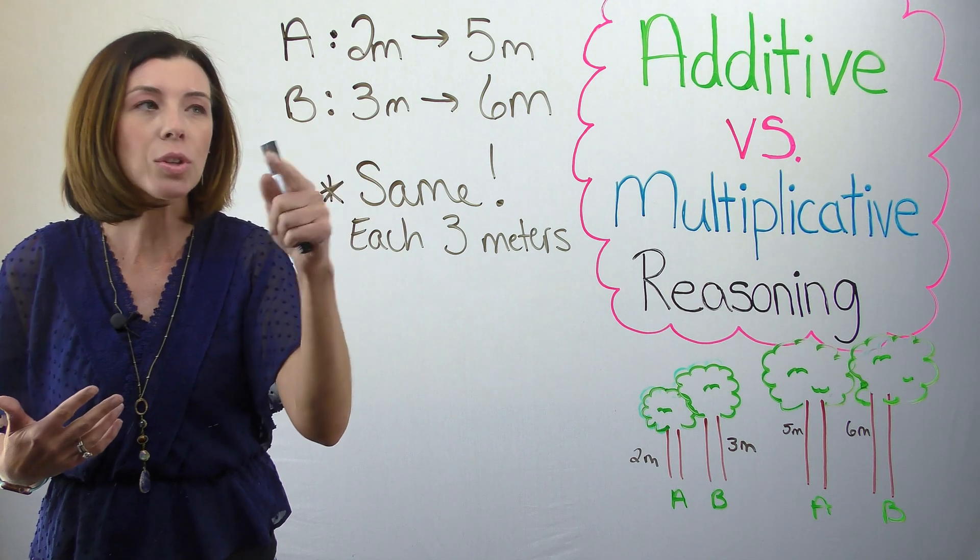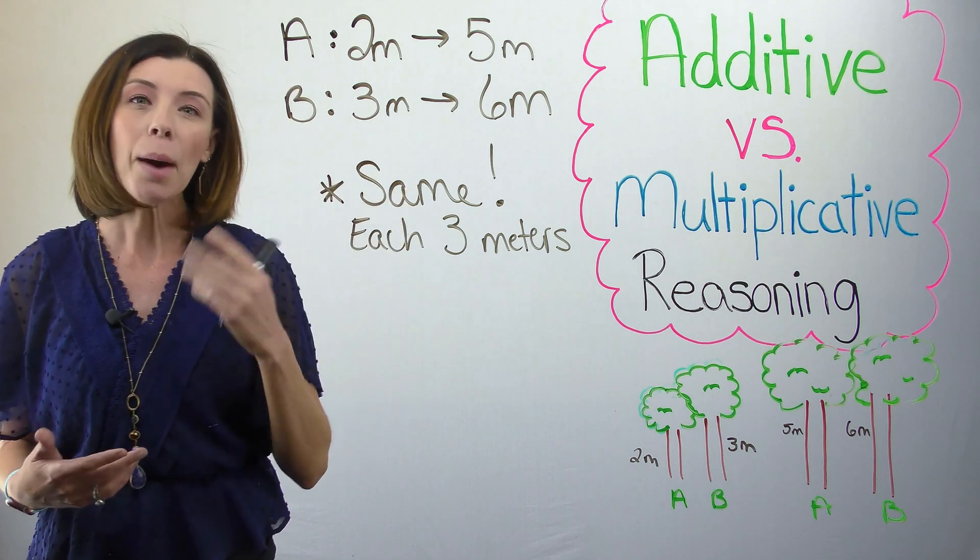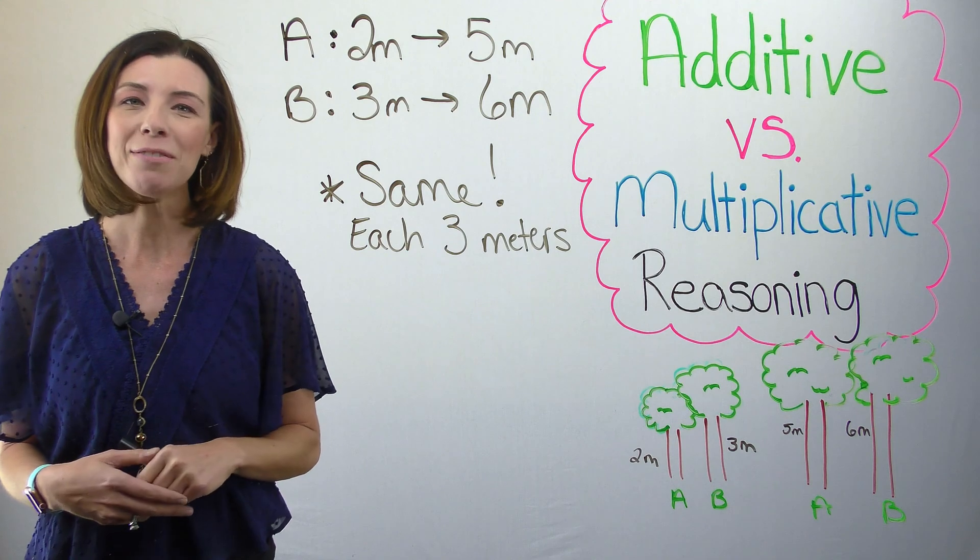Again, tree B is only doubling, and it's going more than double. How much more than double? Let's draw a model and find out.